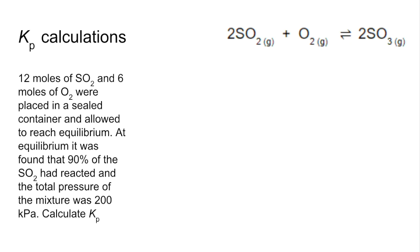So it's an ICE calculation. So we need to know the initial moles, the changing moles, and the equilibrium moles. So initially, we've got 12 moles of SO2, 6 O2, and no SO3. 90% of those 12 moles are going to react, so 10.8 of the moles are going to go. So because of the mole ratio between SO2 and O2, we're going to have half as many moles of oxygen reacting, so it's going to drop by 5.4 moles. And SO3 is going to increase in moles by the same amount of moles of SO2 that's gone because of the ratio between those two components, so it's going to go up by 10.8. Obviously, the equilibrium moles is going to be the difference, so we get those numbers there.